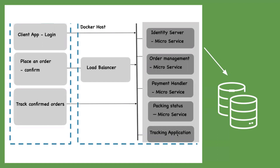Now the question is, if these micro-services are deployed in a Docker environment, then what are the possible network options we can go for? If all these containers are installed in a single Docker host as a standalone instance, then what can be the right network option? Or if these containers are installed in multiple Docker hosts, then what can be the right network option?